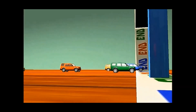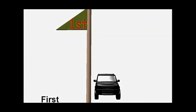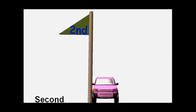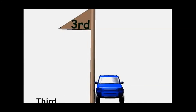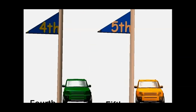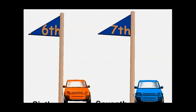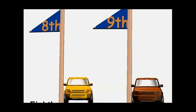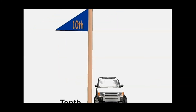Race was completed. Now let's see the position of cars. Black color car is in the 1st position. Pink color car is in the 2nd position. Blue color car is in the 3rd position. Green color car is in the 4th position. Orange color car is in the 5th position. Red color car is in the 6th position. Sky blue color car is in the 7th position. Yellow color car is in the 8th position. Maroon color car is in the 9th position. White color car is in the 10th position. These are the positions of cars.